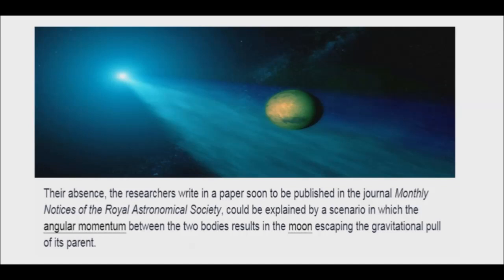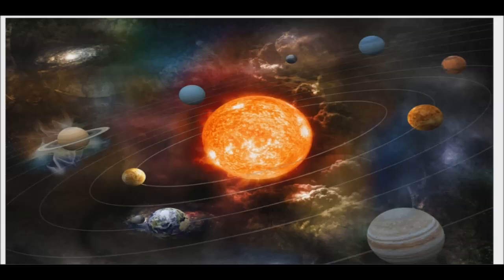While some of those exiled exomoons might end up crashing into the planet or being flung into the star, roughly half are expected to survive and venture out on their own. These moons would become planetary embryos or even fully-fledged planets with highly eccentric orbits of their own.